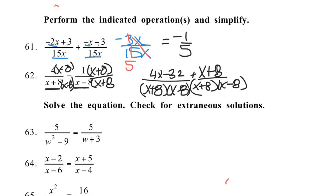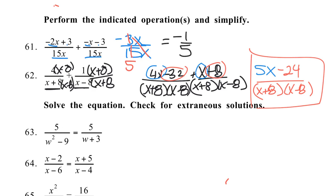So now I can add my numerators. I have 4x and x, which is 5x. I have negative 32 plus 8, which is minus 24, over x plus 8, x minus 8, and I can't factor anything out of the numerator, so that can't be simplified, and that's our final answer.